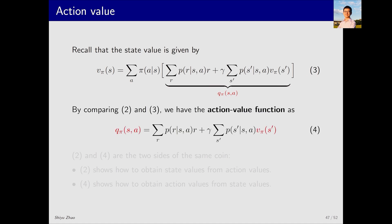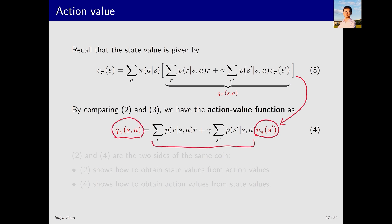Thus we obtain an expression for action value derived from this equation. This method of derivation is based on comparing the third and second equations. We can also derive this equation from the original definition of action value. This equation tells us that if we know the state values of all states and are aware of these terms, we can calculate the value of each action.